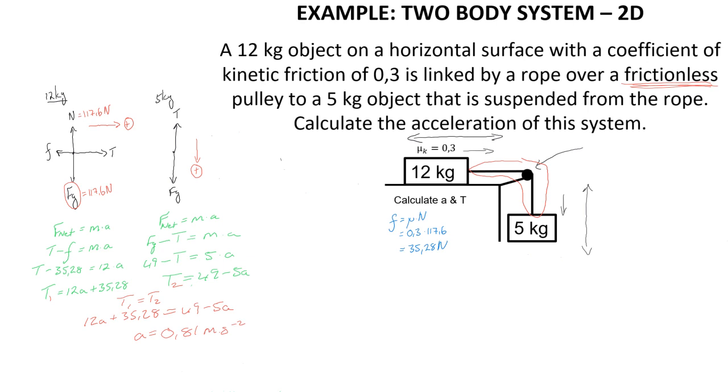And then depending on the object, for the 12 kilogram object that is to the right and for the 5 kilogram object that acceleration is downward. And then we can use this acceleration to calculate our unknown tension by substituting in that value for acceleration, tension is equal to 49 minus 5 times this acceleration, 0.81. And that tells us then that the tension in this rope is 44.88 newtons.